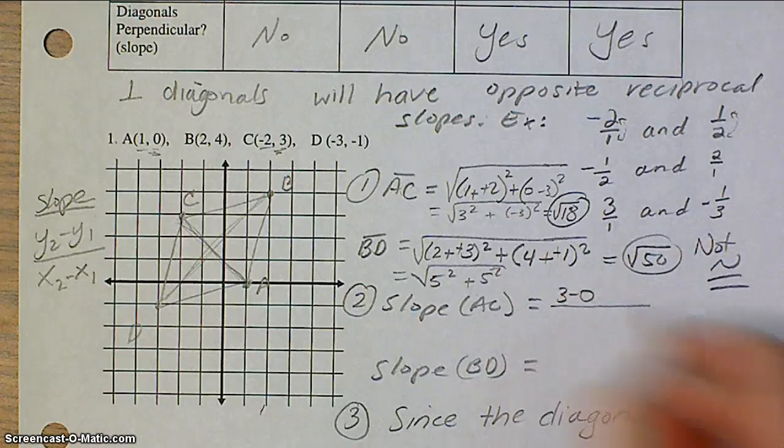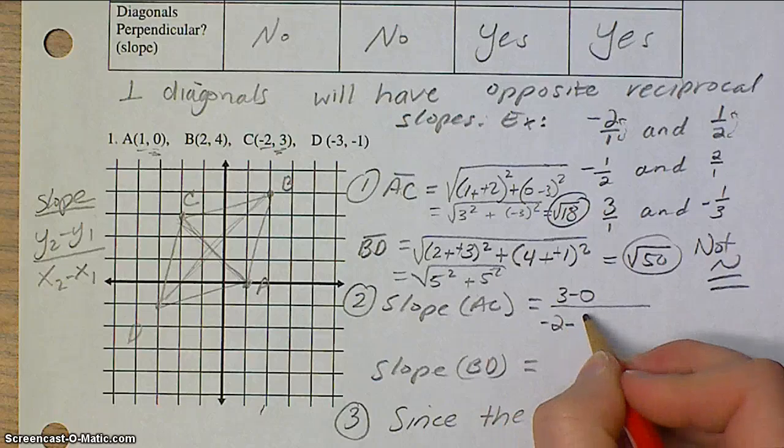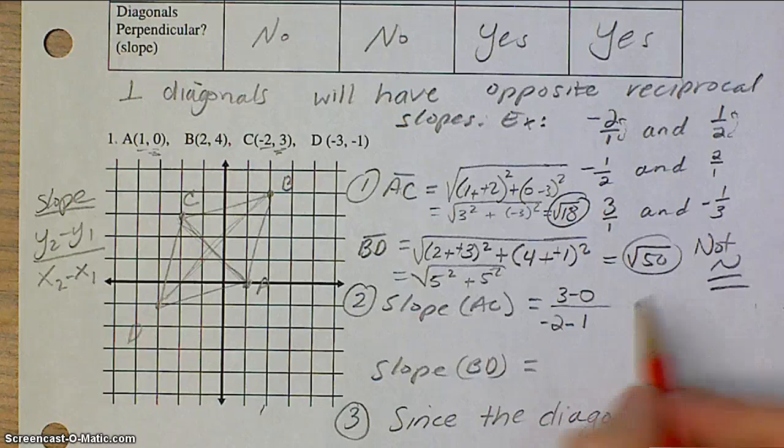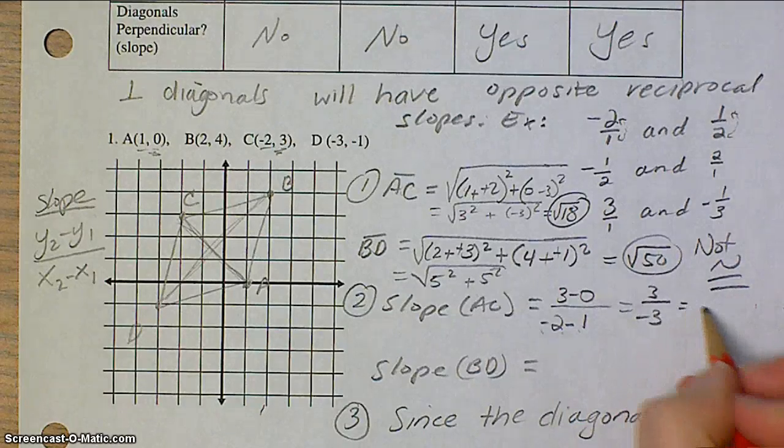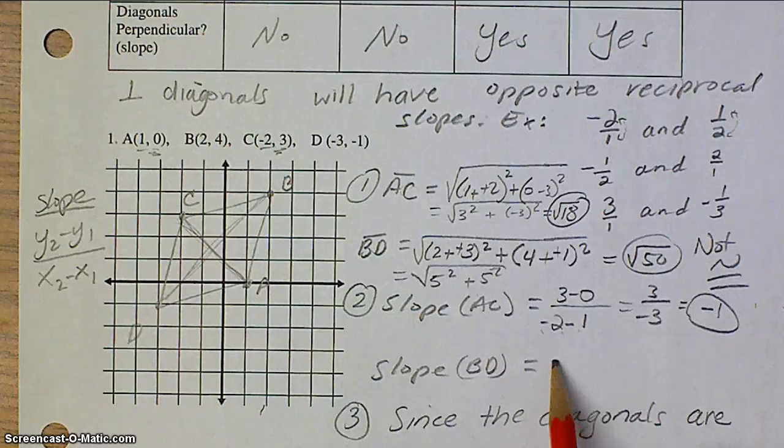So, 3 minus 0 and negative 2 minus 1. 3 minus 0 is 3. Negative 2 minus 1 is negative 3. That simplifies to equal negative 1. Now, we're going to do the same thing for BD.